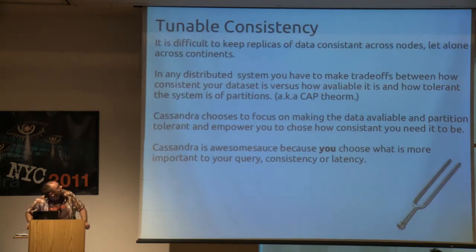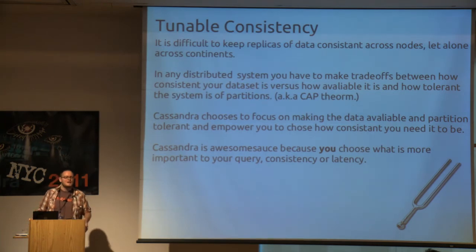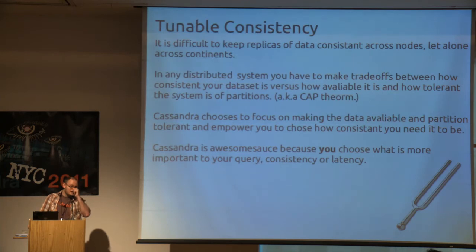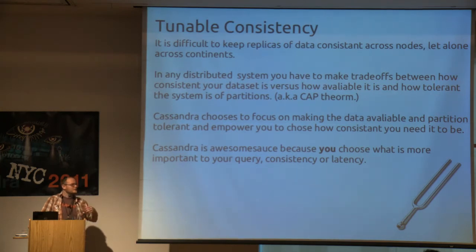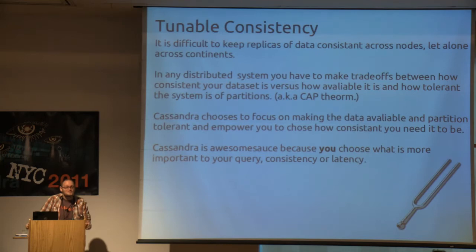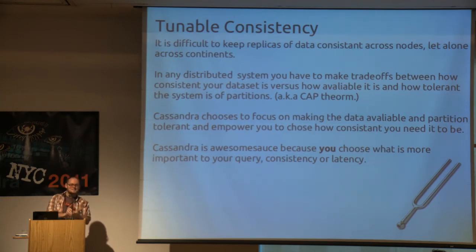Tunable consistency: it's difficult to keep things consistent when you're in the same rack across switches, let alone across continents. You usually have to make a trade-off — you've all heard of the CAP Theorem. Cassandra focuses on availability and partition tolerance over consistency. There's traditional FUD around eventual consistency, but it's actually tunable, and that's one of the awesome things about Cassandra — you get to make the trade-off between latency and consistency, defining what's more important to you.